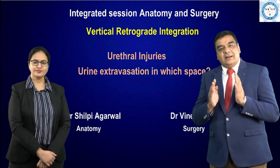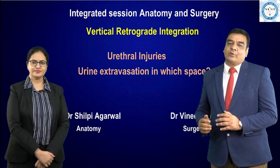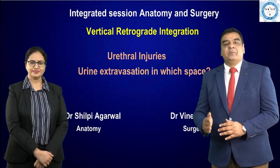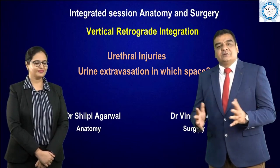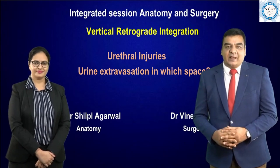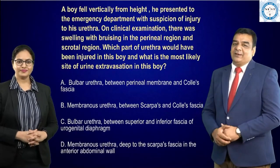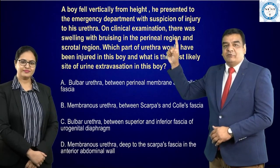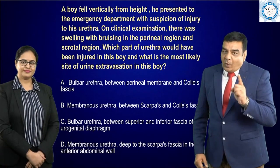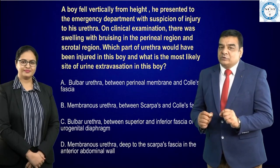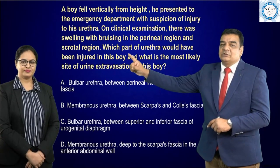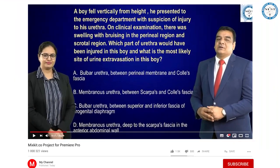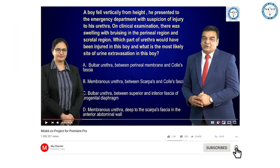Let's take a look at the clinical situation to analyze in a retrograde manner the different aspects of urethral traumas: the different types, the causes, the collection in different spaces, the clinical presentation, and their management. A boy fell vertically from a height and presented to the emergency with suspicion of injury to his urethra. On clinical examination, there was swelling and bruising in the perineal region and the scrotal region. Which part of the urethra would have been injured, and what is the most likely site of urine extravasation?